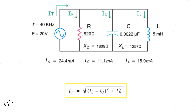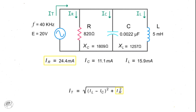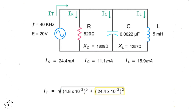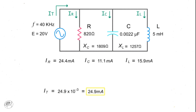To calculate the total current through a parallel circuit, take the square root of the current through the inductor minus the current through the capacitor, squared, plus the current through the resistor, squared. Thus, taking the square root of 15.9 milliamps minus 11.1 milliamps, squared, plus 24.4 milliamps squared, gives a total current of 24.9 milliamps.